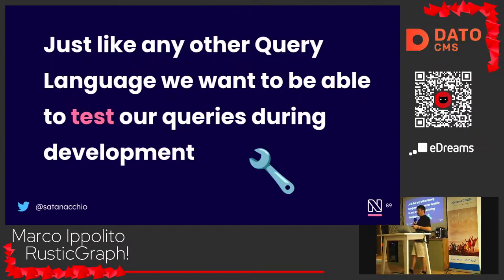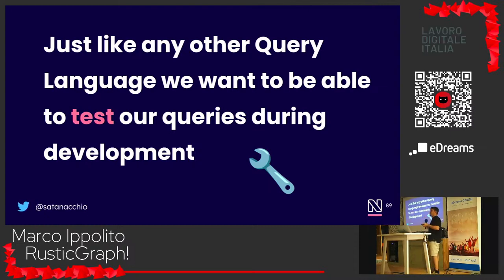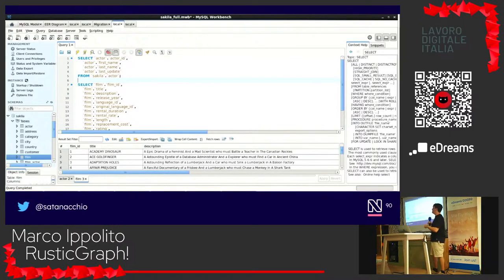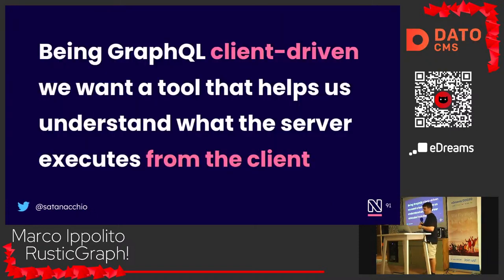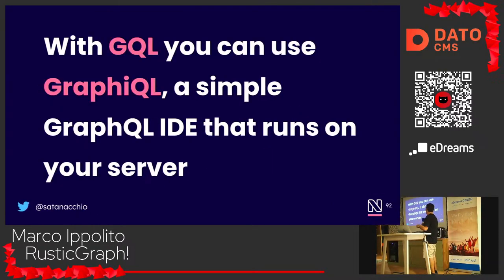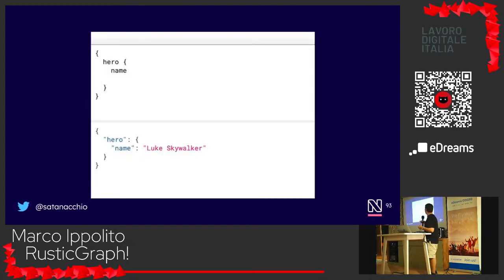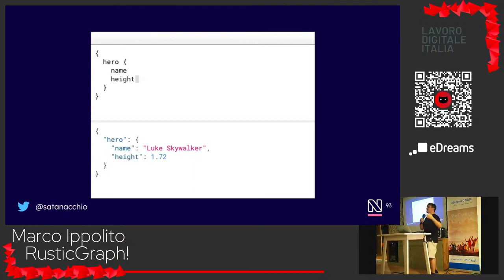GraphQL is for clients who want to be able to test from the client side. On SQL you have benchmarking tools, and for GraphQL we have GraphiQL — a simple IDE that runs on your server and allows you to test queries in real time. Let's see if it works. It's a bit slower, but it works — you can test queries and see the results.